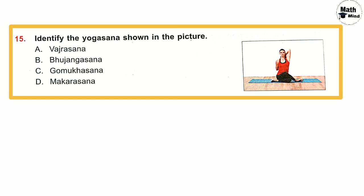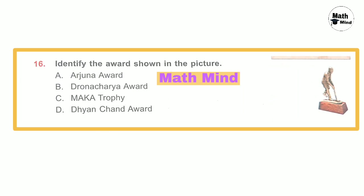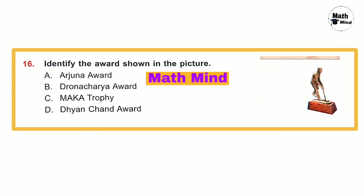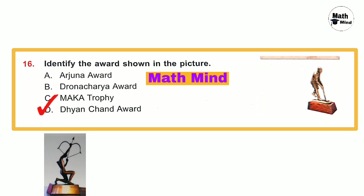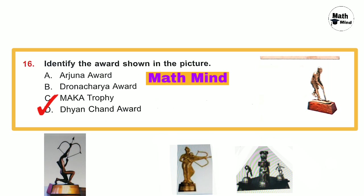Question number 15: Identify the yogasana shown in the picture. Option C is correct — this is Gomukhasana. Question number 16: Identify the award shown in the picture. Option D is correct — Dhyan Chand Award. Others shown are: Arjun Award, Dronacharya Award, and Maka Trophy.